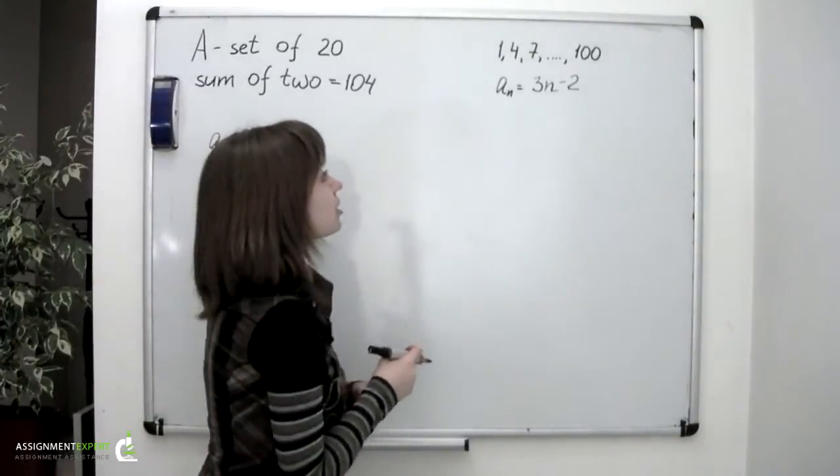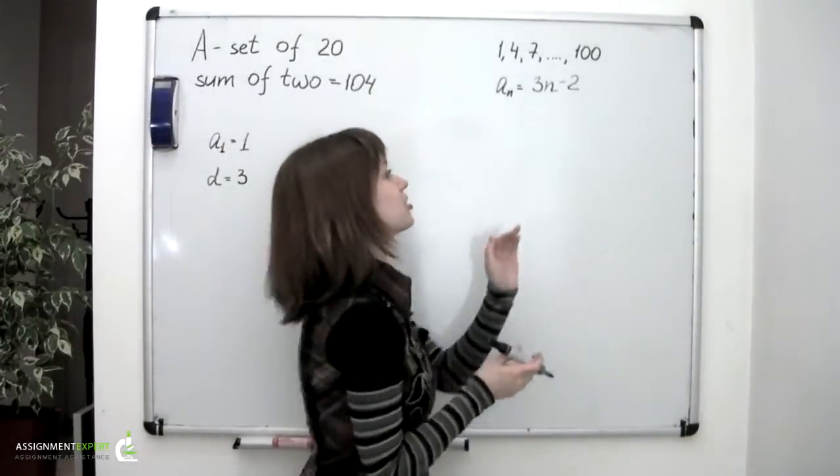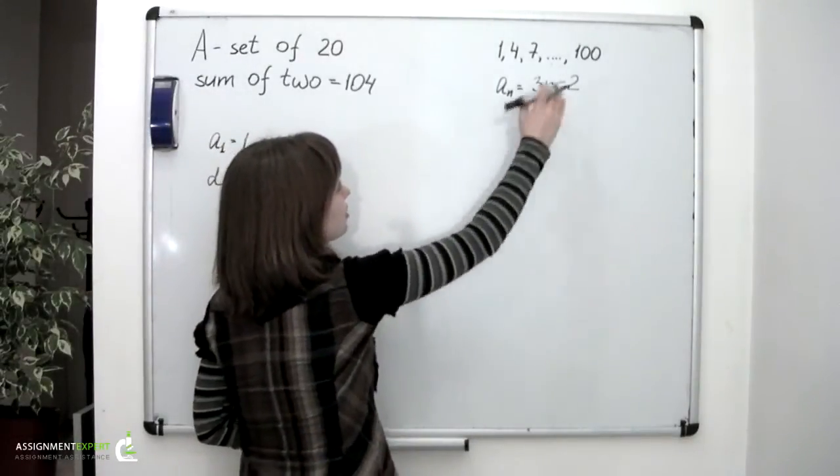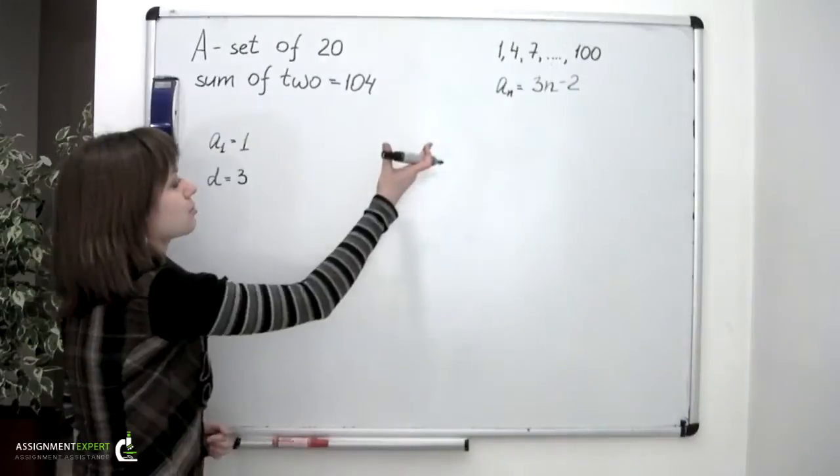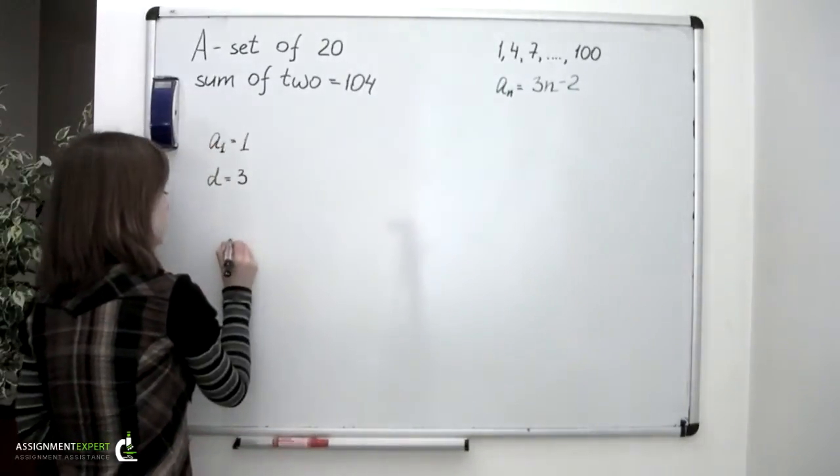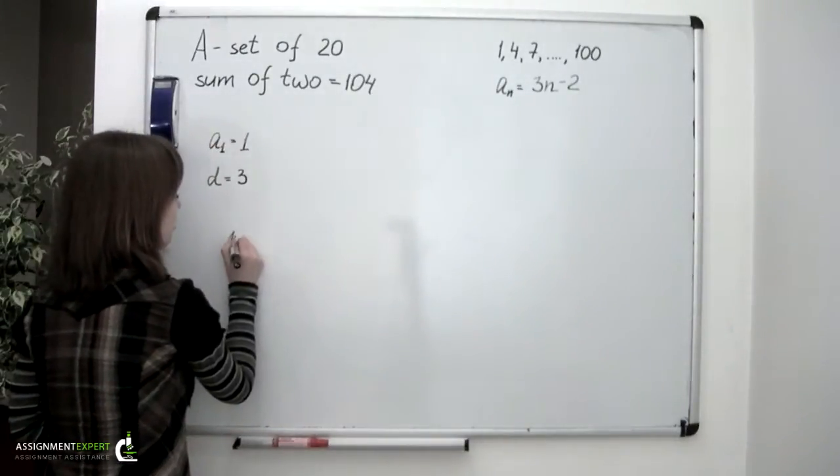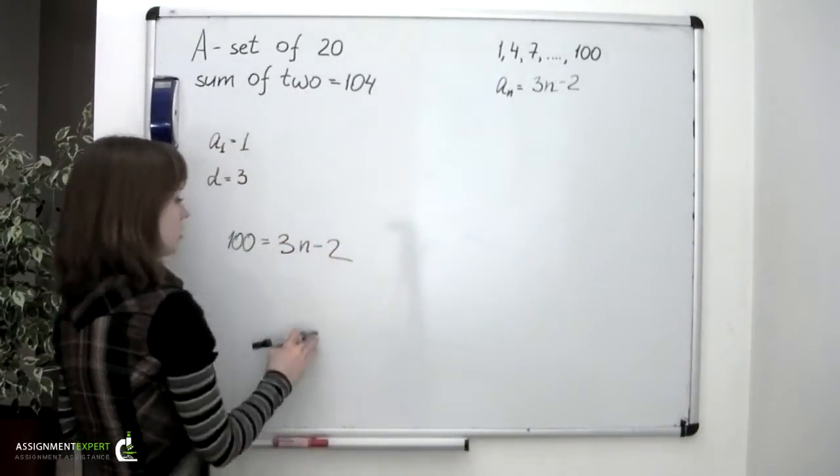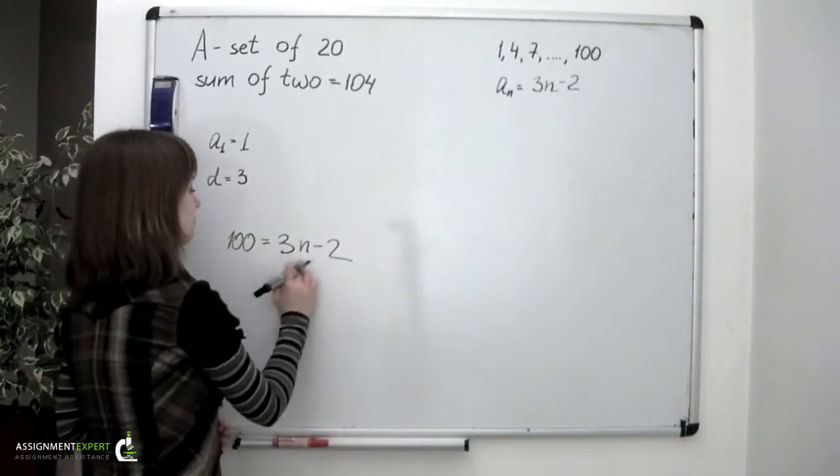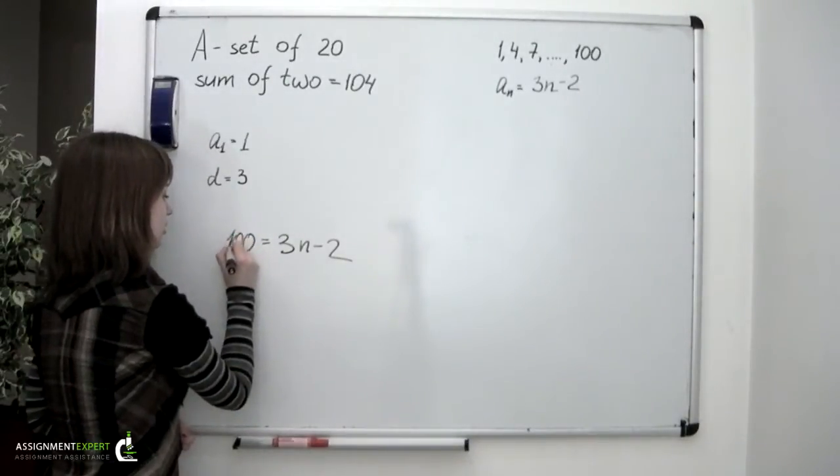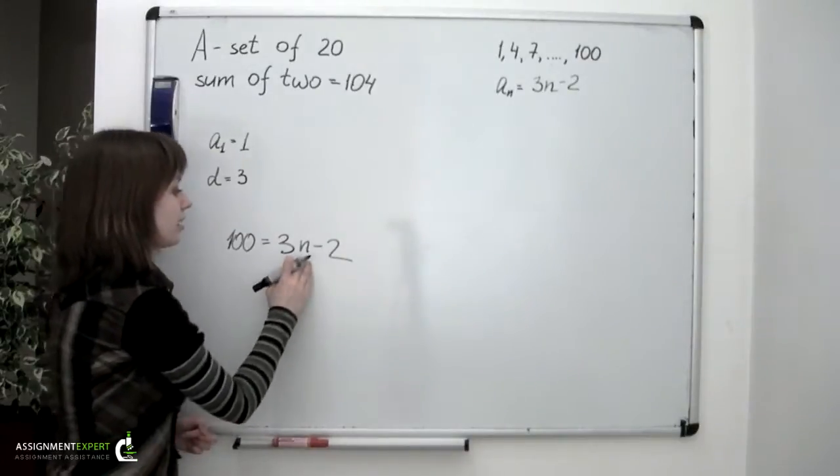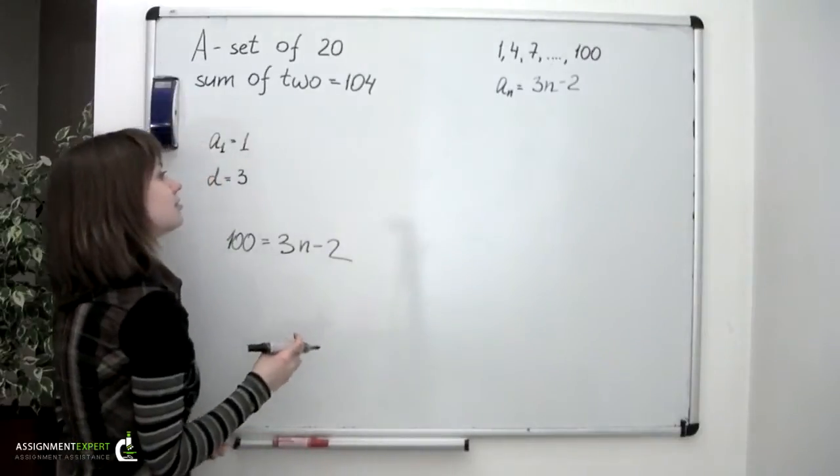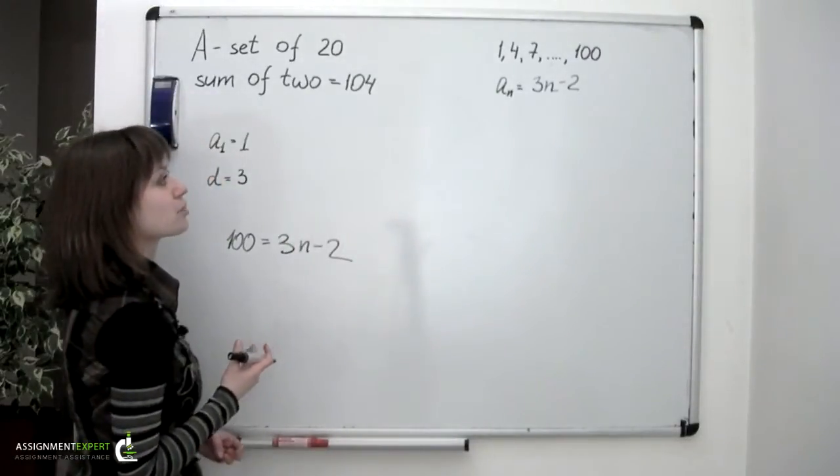We can also find out the number of terms in this progression by setting A sub n to the value of 100, so 100 is our last term. We have 100 equal to 3n minus 2, and solve this equation for n. And thus, we would obtain n, which would be the number of the last element, and consequently, the number of terms in the progression.